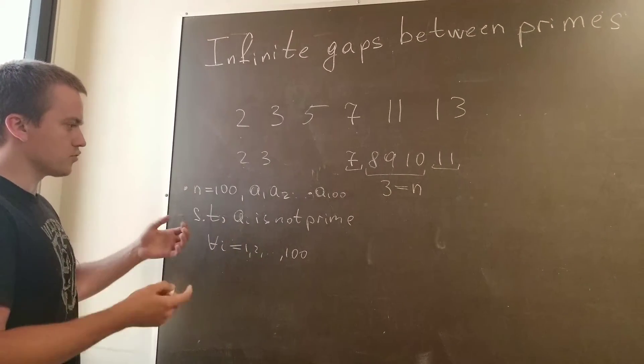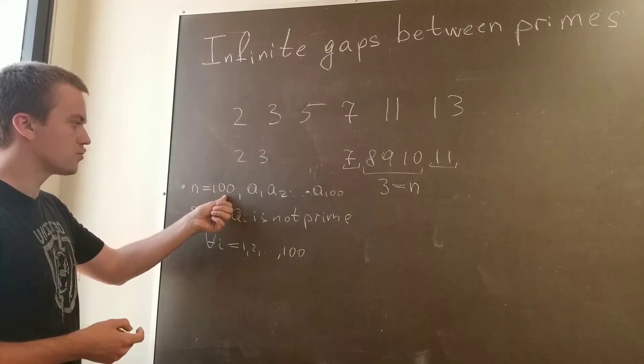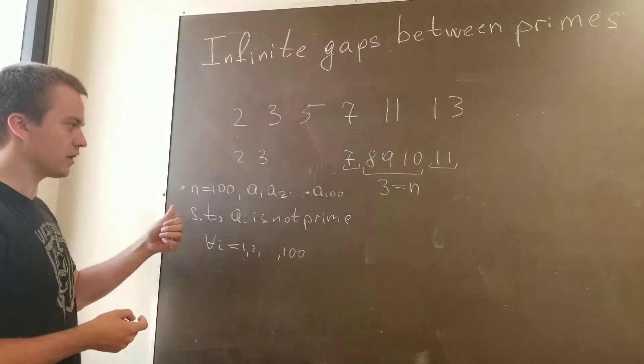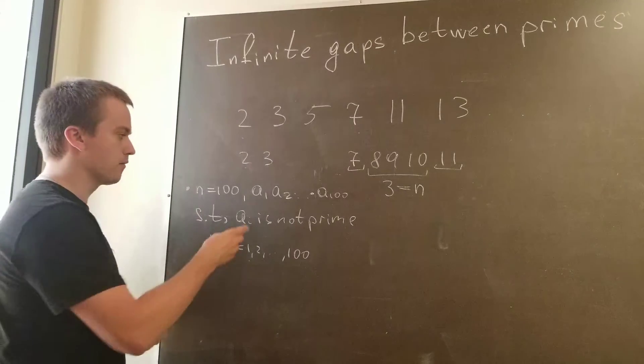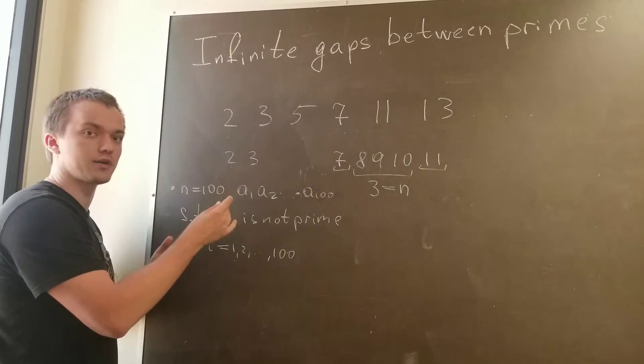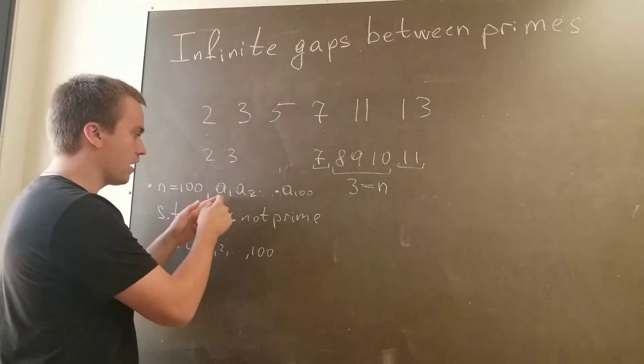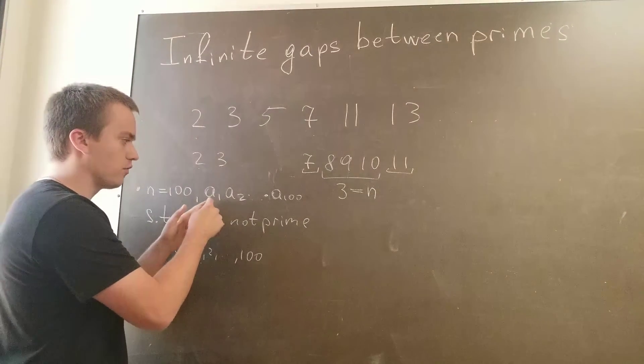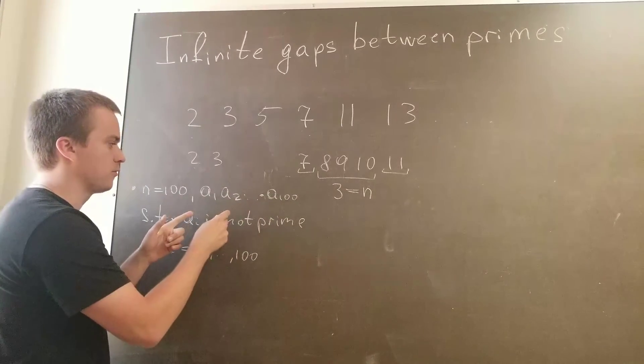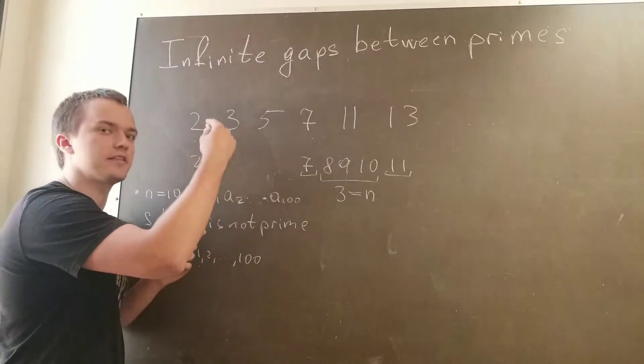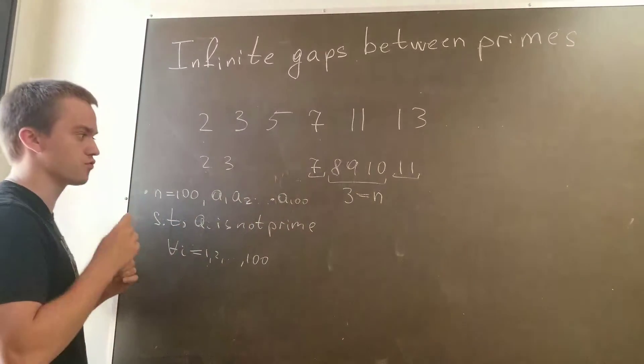And the construction we're going to prove for n equal to 100 is true for any n. So basically what we're showing is that any time you give me a number, for example n like thousand, ten thousand, one million, for this number I can give you a formula such that for this sequence of numbers, between a_1 and up to a_10,000, there's going to be no prime. I think this problem is really cool.